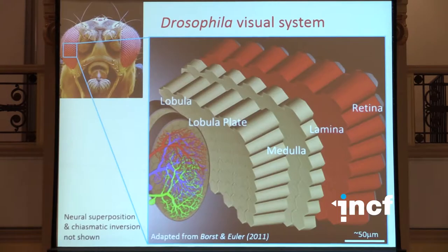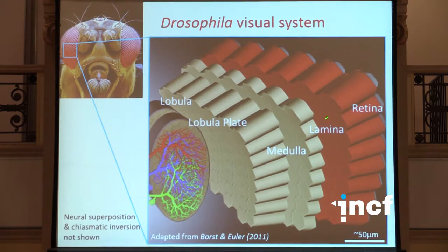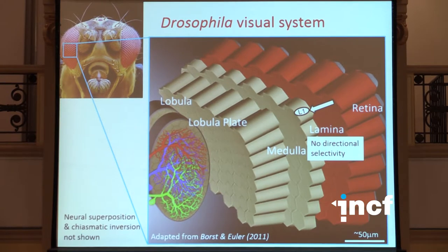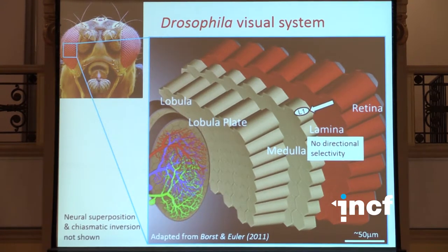We decided to address this problem in the fruit fly visual system, about which a lot is known. The light signal is reported by an array of photoreceptors — collectively referred to as the retina in the fly — that signal to downstream structures organized retinotopically, reflecting the honeycomb array of the fly eye. These are called the lamina, the medulla, and the lobular plate. The lamina neurons are not directionally selective, yet a particular cell type called L1, neurons of which repeat in every column, is crucial for detecting on-motion — if you silence it genetically, the fly becomes blind to motion.